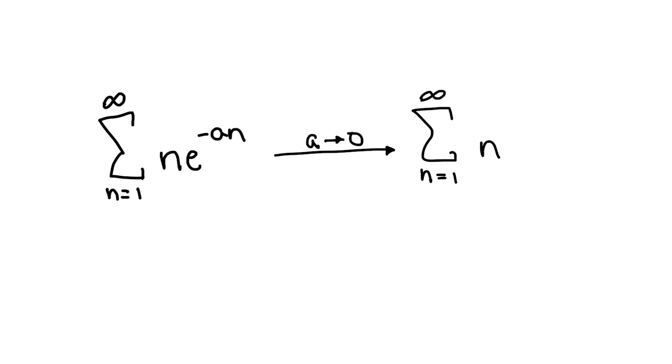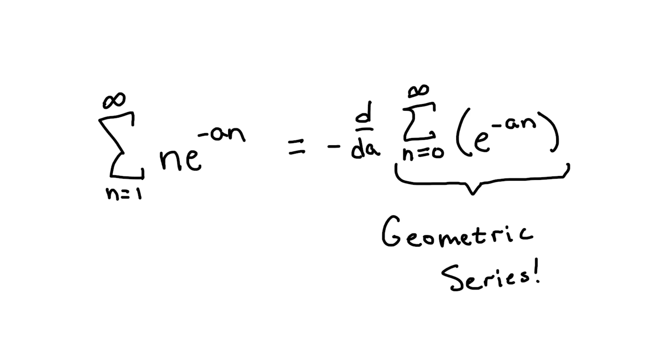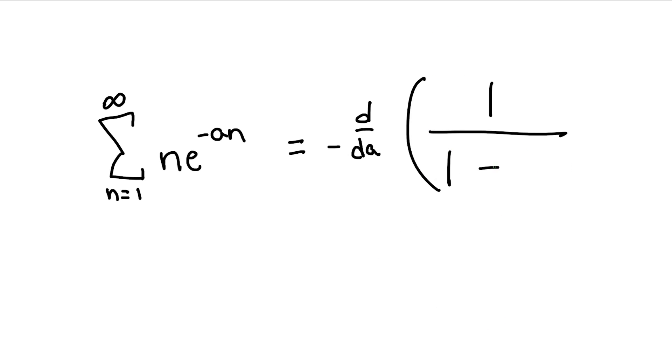Now, to evaluate this sum, we need to utilize some trickery. First, we can recognize that we can rewrite the term in the sum as a derivative on a. Next, since the derivative is on a and the sum is on n, we can flip the order and take the sum first, but this sum is just a geometric series, which converges to 1 over 1 minus e to the a.